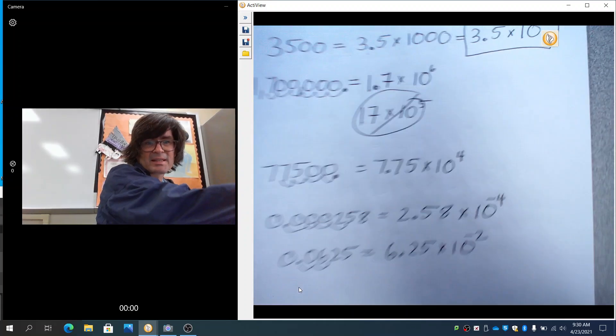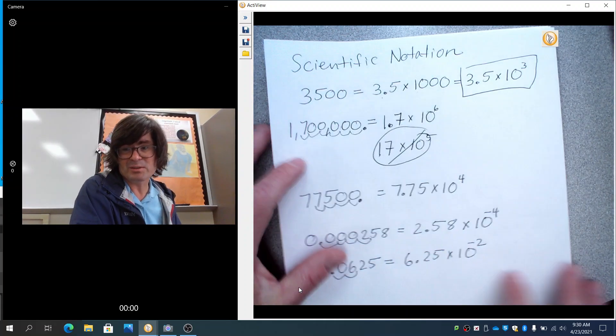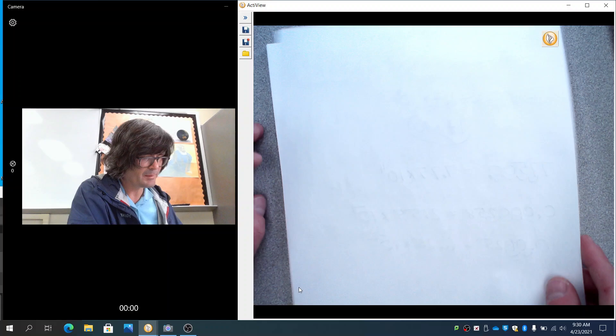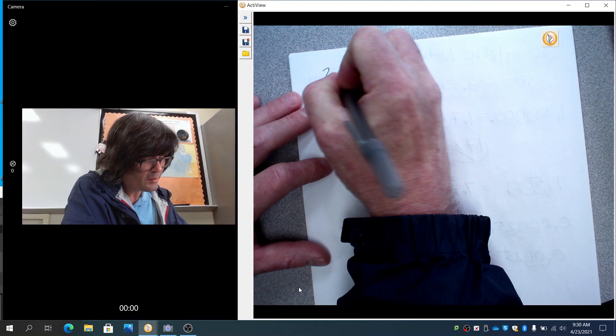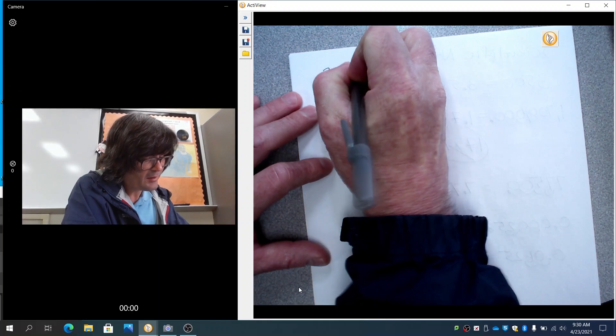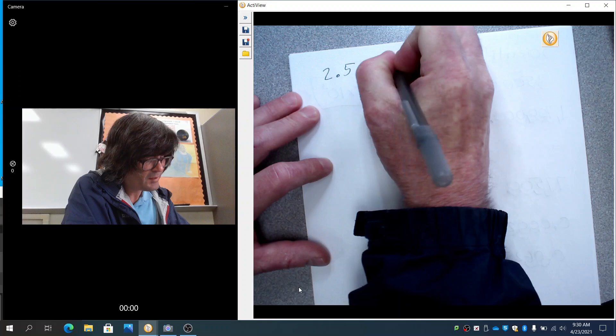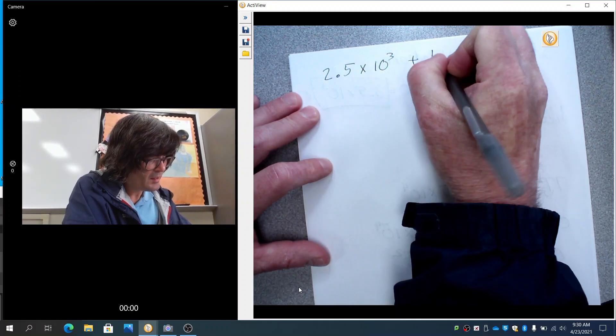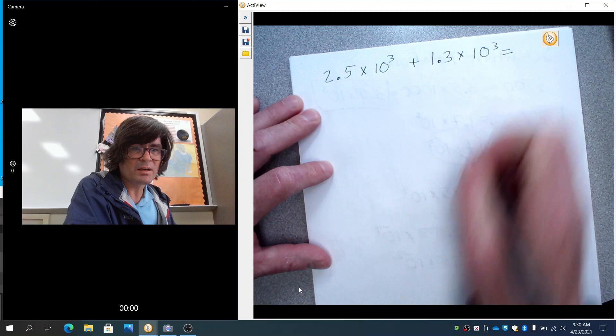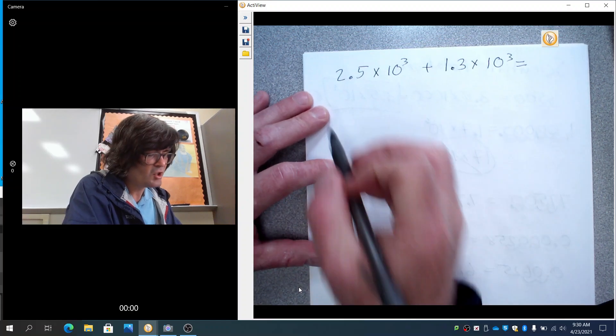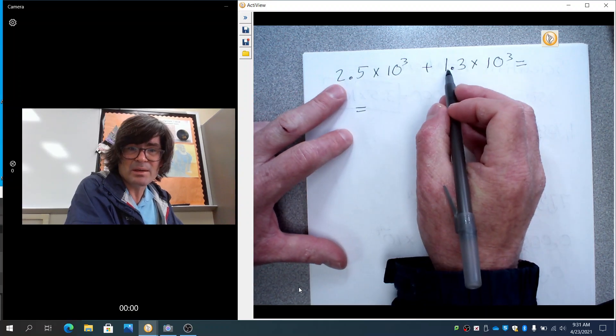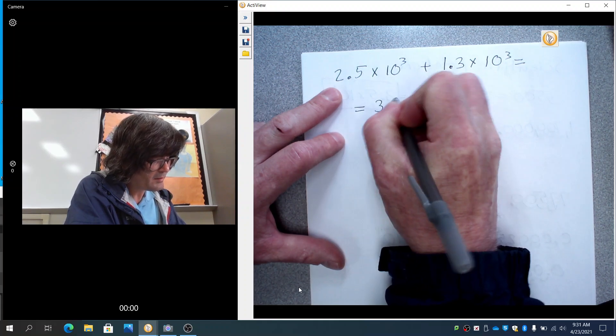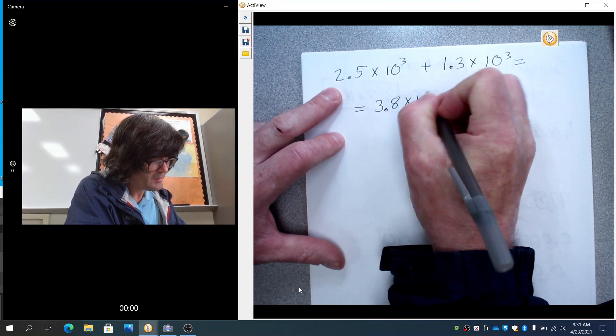Another place with scientific notation that people really struggle is adding, subtracting, multiplying, and dividing. So let's talk about that. First of all, with adding and subtracting, there's a very limited circumstance when you can add or subtract. And what that is is when the 10 to the powers are the same. So here I've got 2.5 times 10 to the third plus 1.3 times 10 to the third. If that happens, you can add these first numbers. That would be 3.8 times 10 to the third.